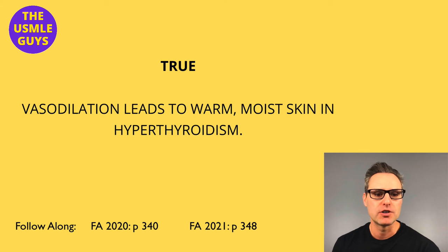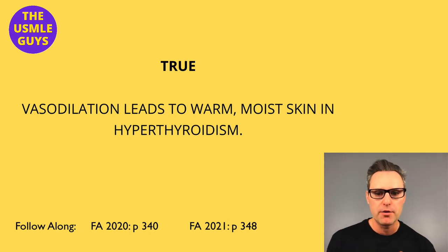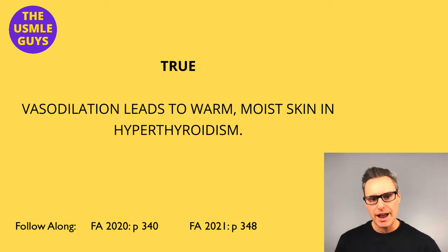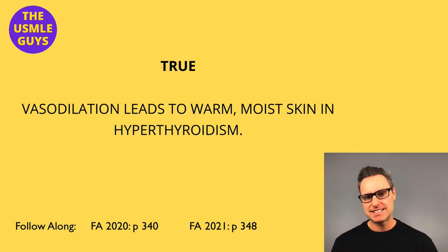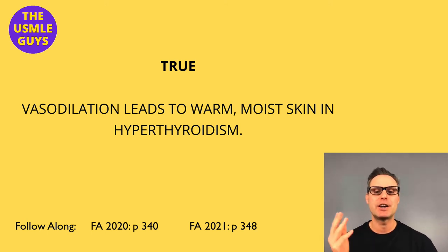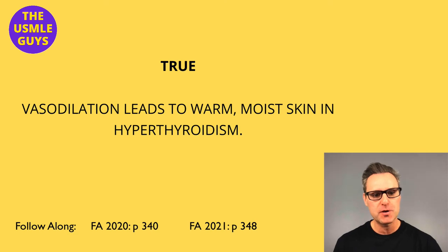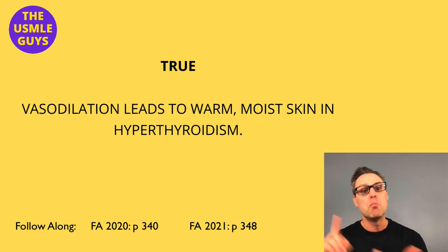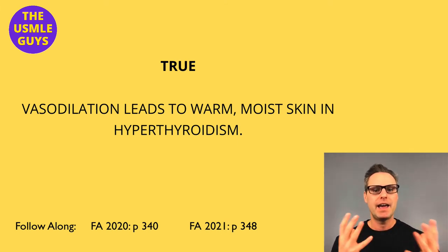Now that we've gone through those six true-falses, let's talk about some of the common high-yield differences between hyper and hypothyroidism. Hypothyroidism slows things down; hyperthyroidism speeds things up. Hypothyroidism is characterized by cold intolerance, weight gain, cool dry skin caused by decreased blood flow, coarse and brittle hair and nails, myxedema, and alopecia. Hyperthyroidism is characterized by warm moist skin, heat intolerance, excessive sweating, and weight loss.